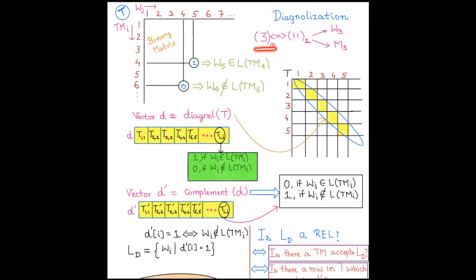The decimal number 3 converted to a base-2 binary string can be considered both a word and a Turing machine. So w_3 should not belong to the language generated by Turing machine 3 — this is the diagonalization language definition. Now I consider a vector D of the diagonal elements of table T: t_{11} is the first element, t_{22} is the second, and so on. An element t_{ii} = 1 means word i is accepted by Turing machine i; t_{ii} = 0 means the string is not accepted.